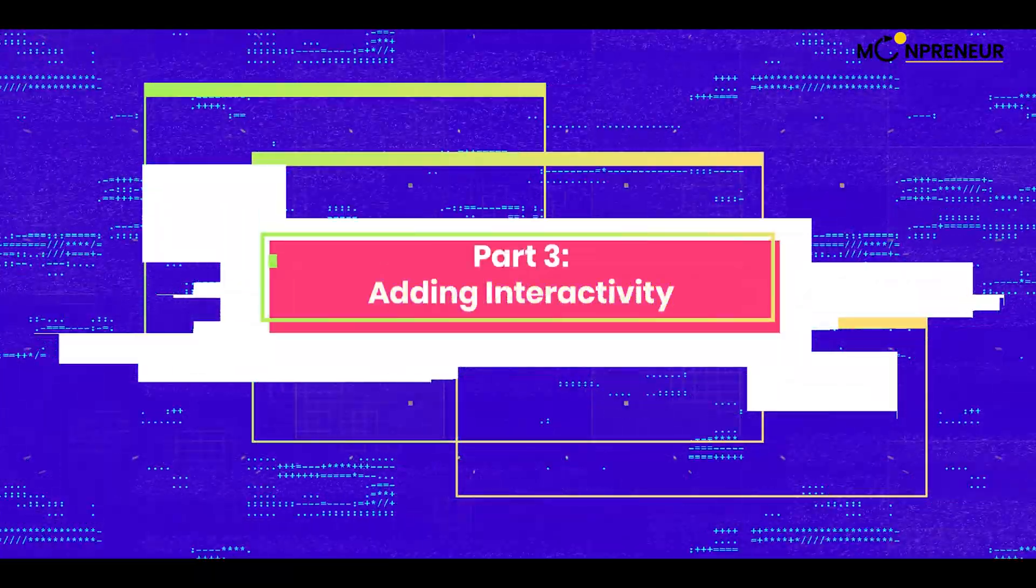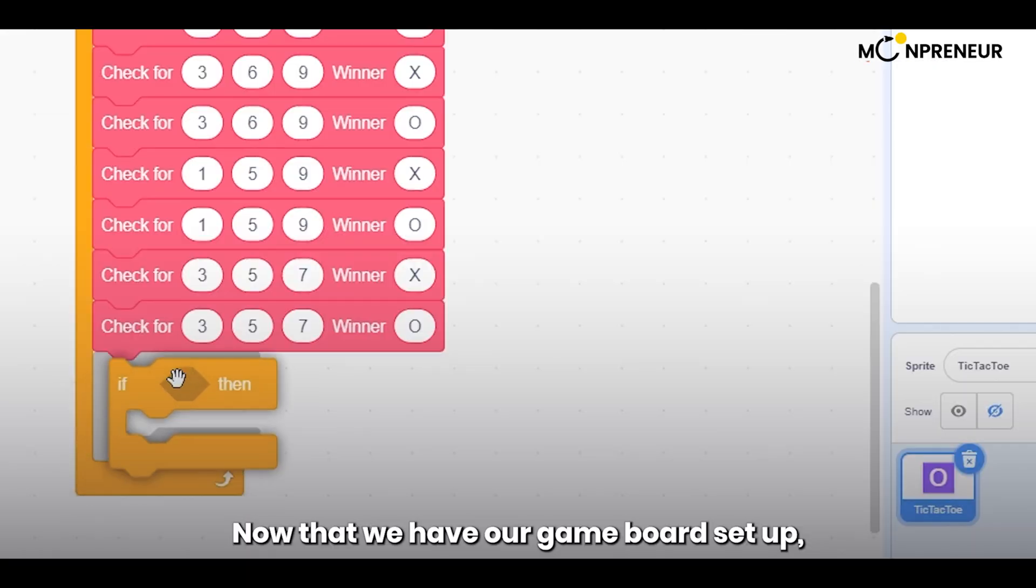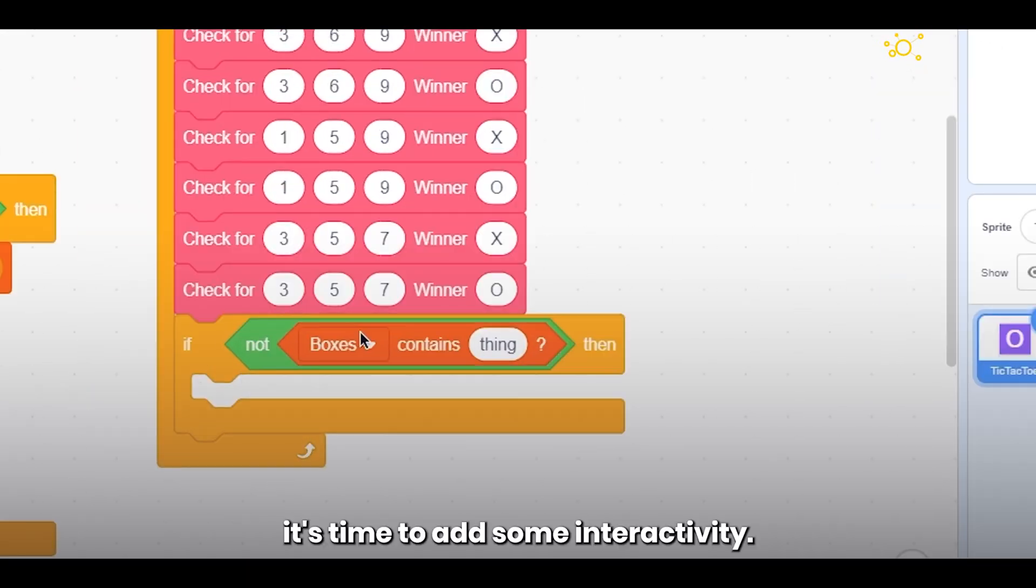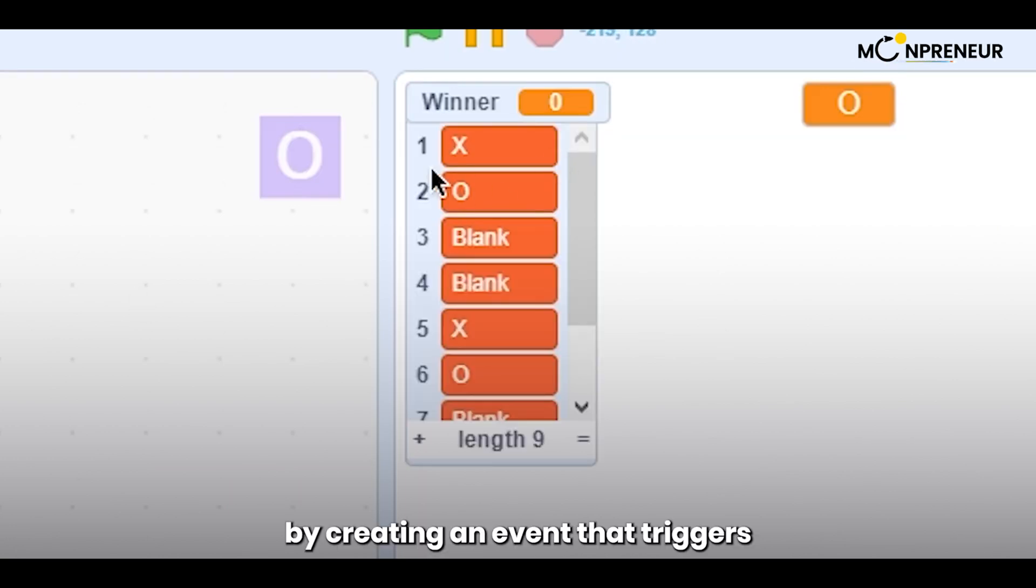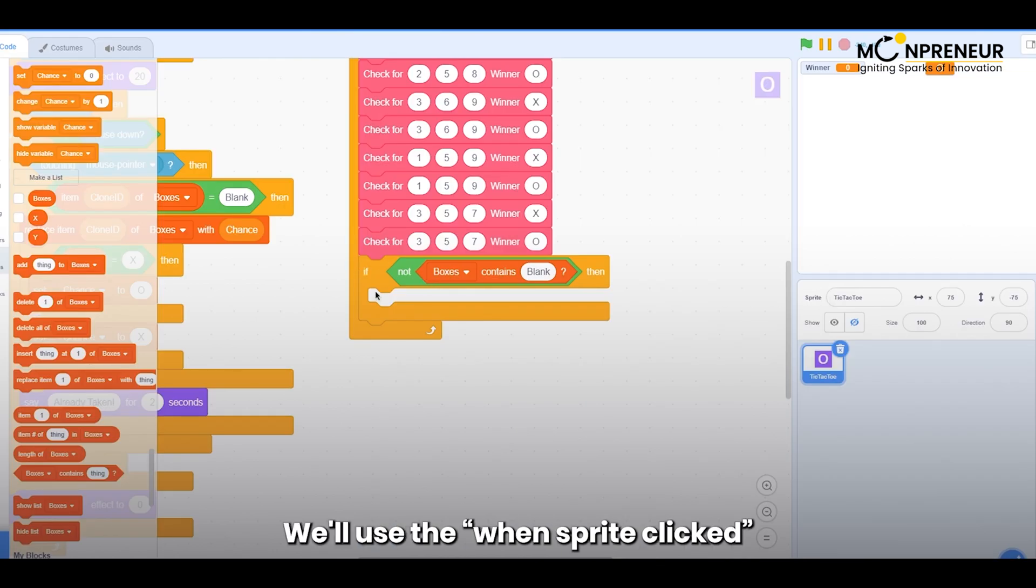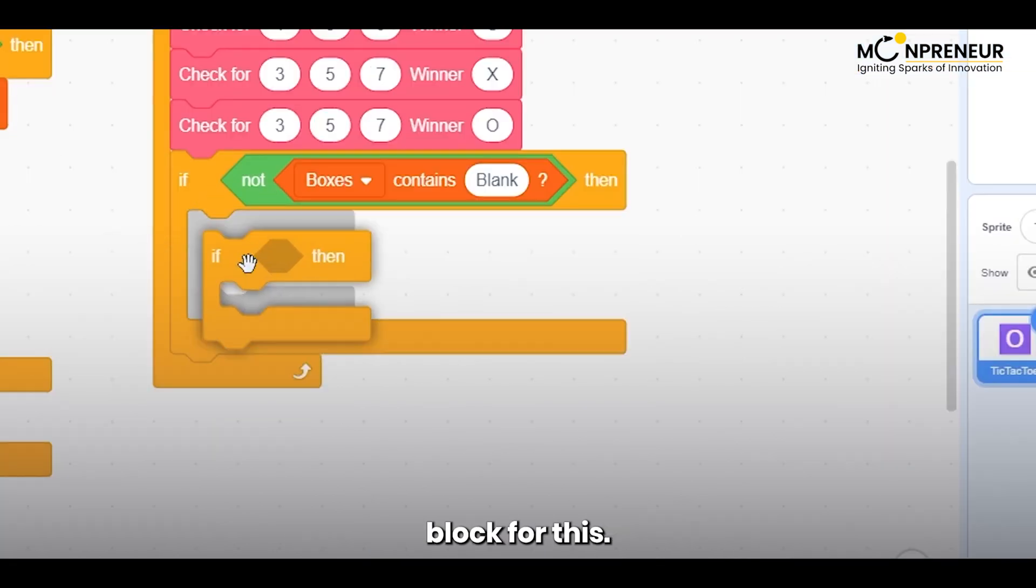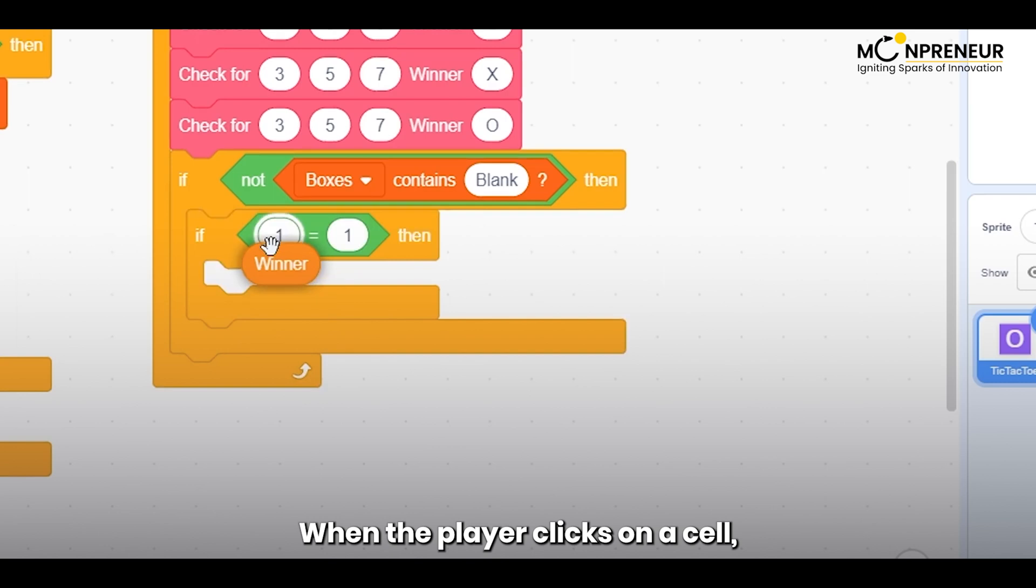Part 3. Adding Interactivity. Now that we have our game board set up, it's time to add some interactivity. We'll start by creating an event that triggers when the player clicks on a cell in the grid. We'll use the WhenSprite Clicked block for this.